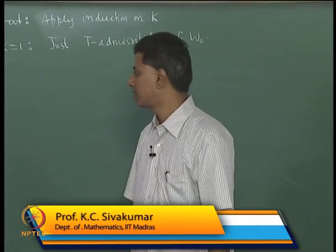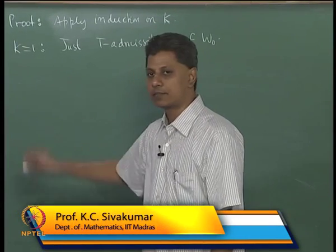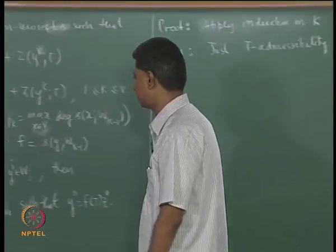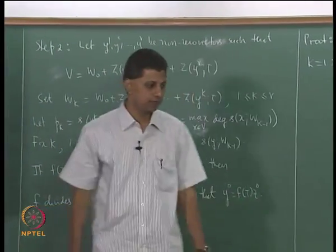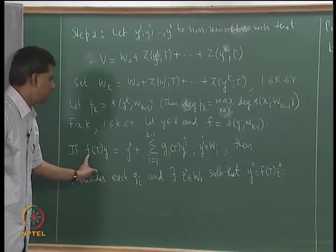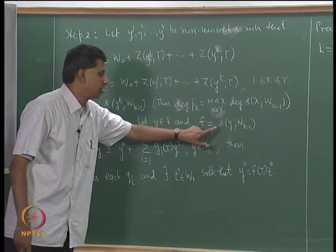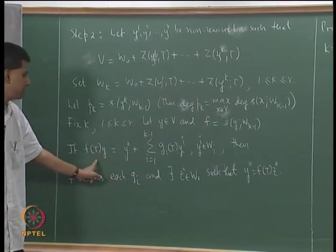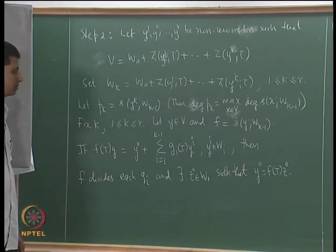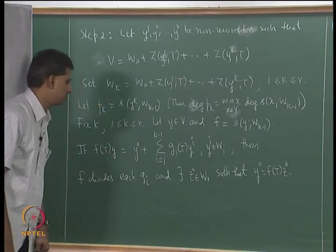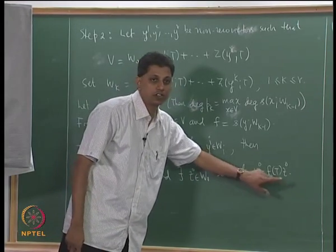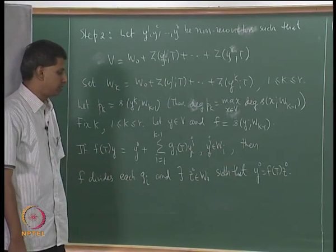We are proving step 2. The statement: we have this representation for f(t)y, where y is an arbitrary vector and f is this polynomial, so f(t)y must belong to W_{k-1}. Looking at a general representation of f(t)y, whenever we have a representation like this, it always holds that f divides each of those polynomials g_1, zeta, etc., g_{k-1}, and this y_0 has the property that it can be written as f(t)z_0 for z_0 in W_0. This is t-admissibility.